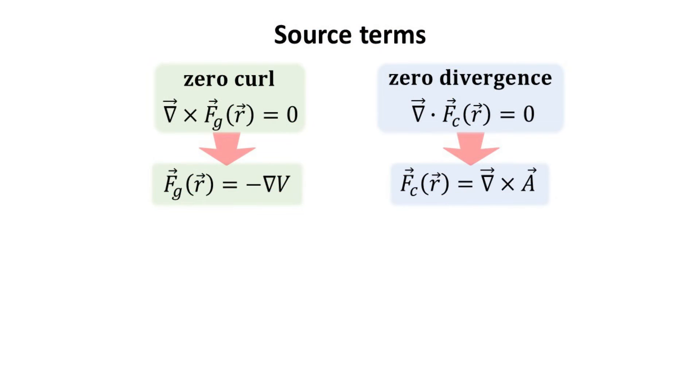It will thus be instructive to express these gradient and curl fields in terms of their sources. The gradient field which has zero curl has finite divergence and can be attributed to a scalar source function, herein denoted as rho.